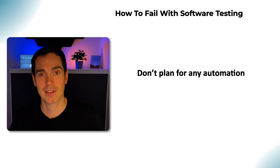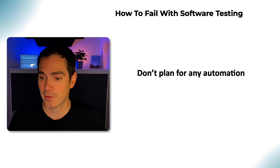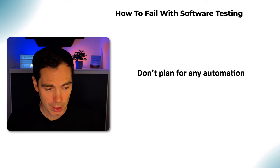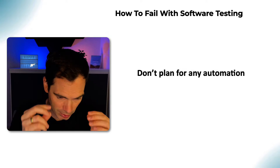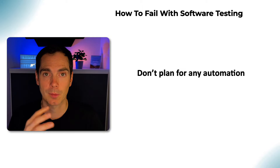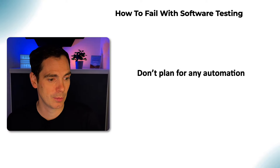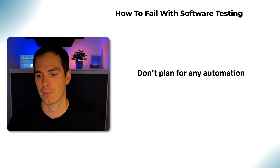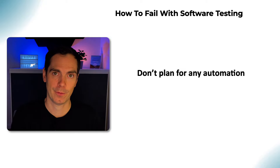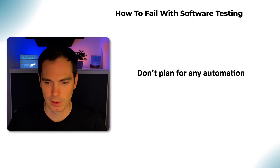Don't plan for any automation and you will fail — because automation is an important piece in your quality strategy. It's not something you should 100% rely on and say 'let's automate all the things and we don't need to do anything anymore' — that's also wrong. Rather, plan it in advance, plan it accordingly, and then you can benefit from it in the long run. But if you don't plan for it at all, you will fail with software testing.